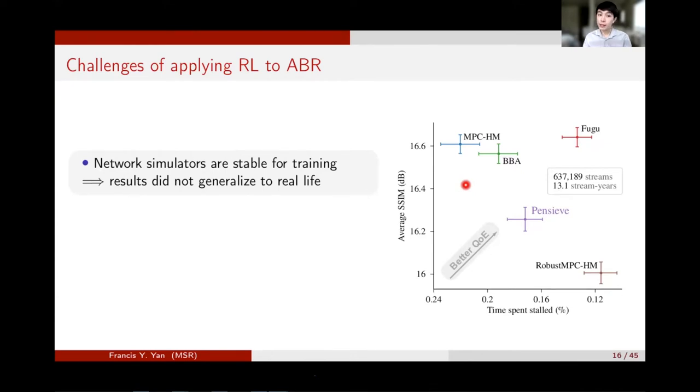Pensive was trained in simulation using a type of RL called model-free RL and reported near optimal performance in simulation. However, this is our real result on the experiment on Puffer. When tested over the real internet, it did not really outperform the other ABR algorithms it compared with in the paper. I'll present this figure at the end again and explain what's going on here. For now, all we need to know is, unfortunately, Pensive's simulation results were unable to generalize to real life.